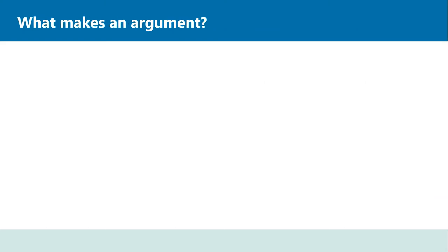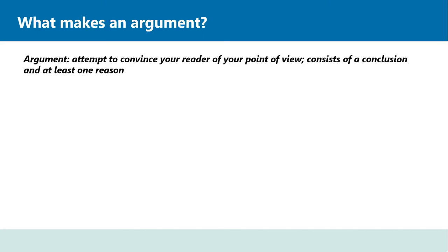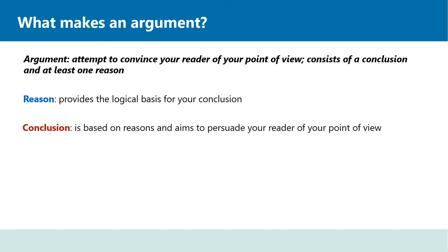Now that we know what we stand to gain from training ourselves in critical thinking, let us look at how we can apply it to writing arguments. You have already learned about the structure of arguments in our video Structuring and Creating Arguments and Counter-arguments, so let's recap on what an argument is made up of. Arguments are central to critical thinking. An argument is an attempt to convince your reader of your point of view. It consists of a conclusion and at least one reason that supports this conclusion. Your reason provides a logical basis for your conclusion, your conclusion is based on reasons and aims to persuade your reader, and your evidence provides support for your reason. An argument needs all three parts in order to be convincing.